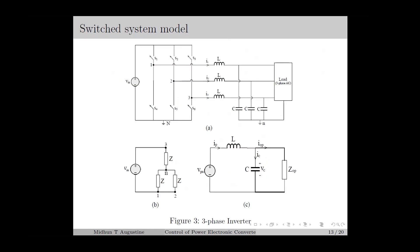We consider a three-phase inverter for which the circuit diagram is given in figure 3a. At a time, one switch in each leg is on, based on which points 1, 2, and 3 will be connected to either plus Vin or 0 volts. For example, if S4, S5, and S3 are on, then phases 1 and 2 will be connected to ground and phase 3 will be connected to plus V, which results in an equivalent circuit as in figure 3b, where Z is the equivalent impedance of each phase.